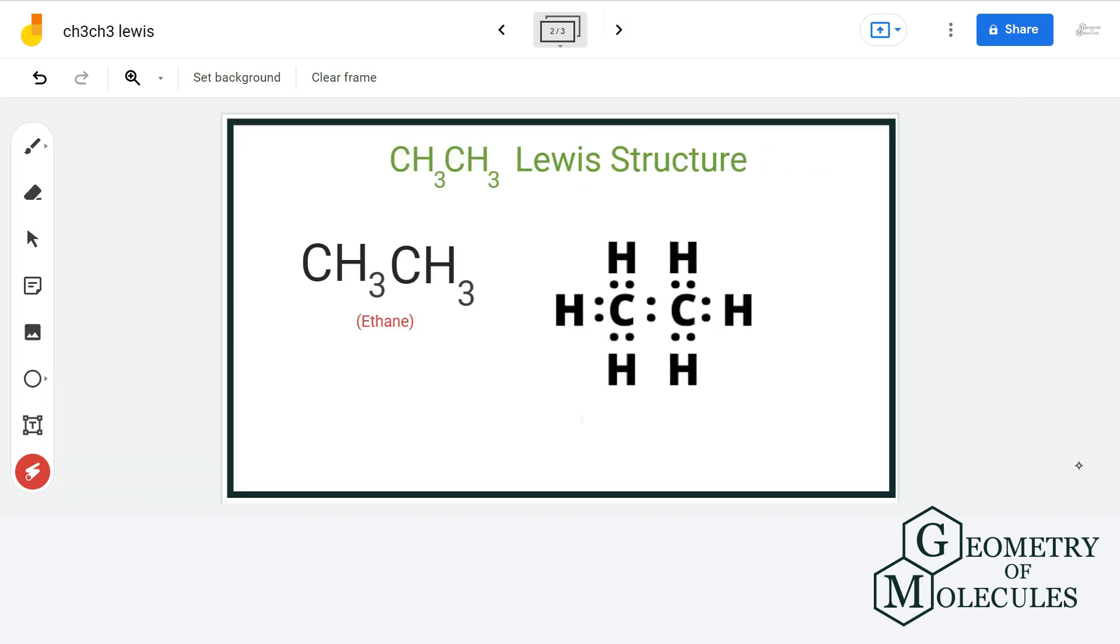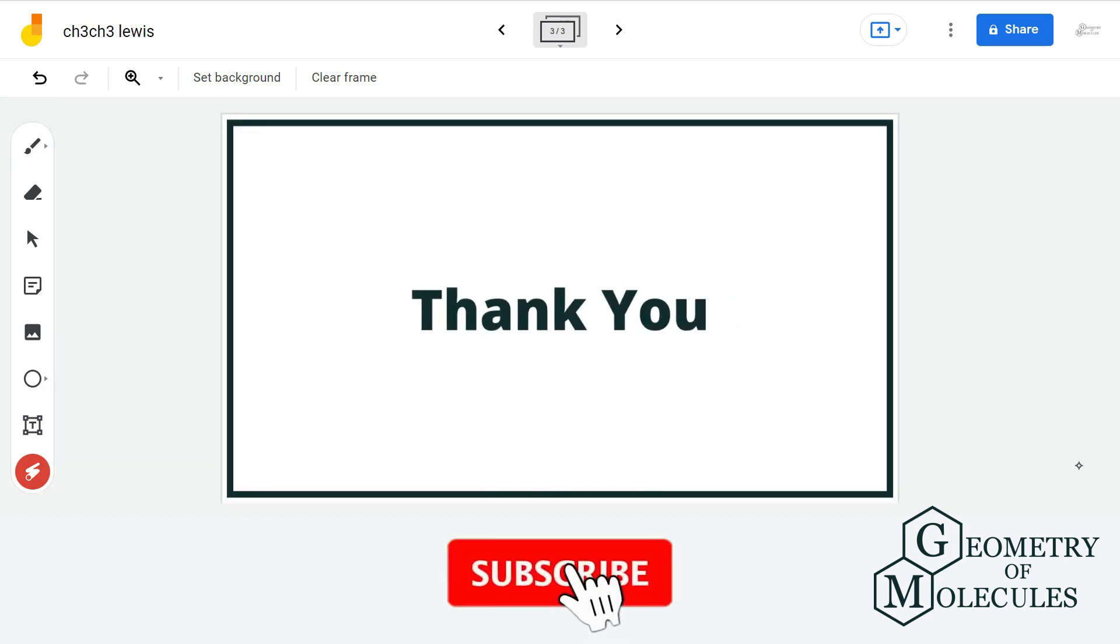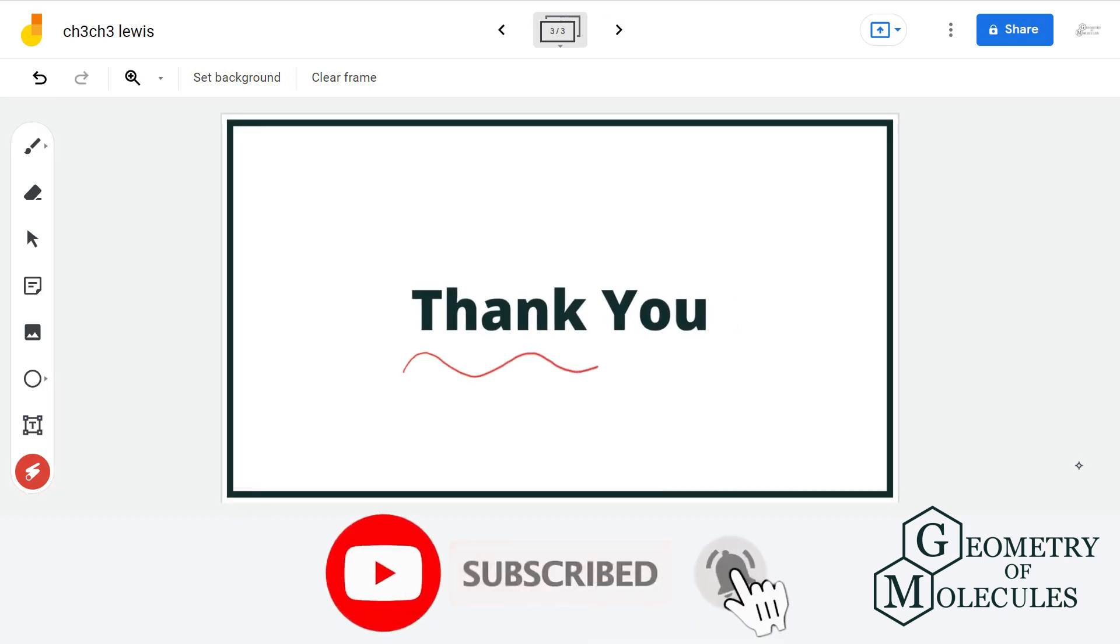This is the final Lewis structure of ethane, in which every atom has a complete outer shell and zero formal charge. For more such videos, make sure to subscribe to our channel. Thank you for watching.